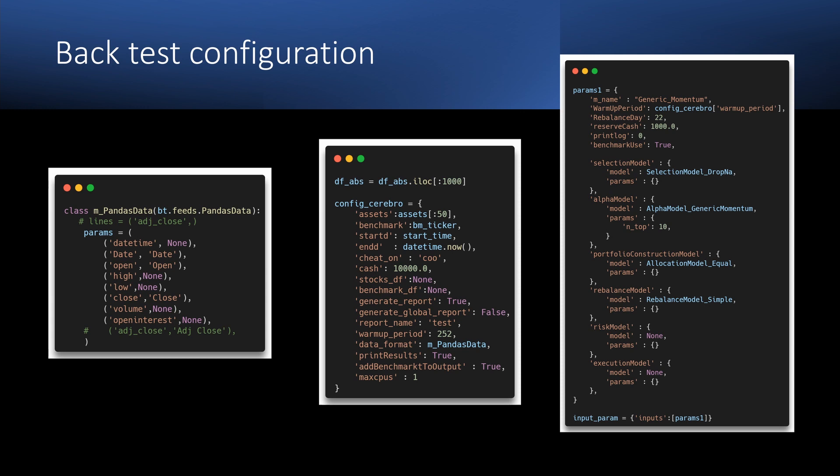After that, we need to create our strategy configuration. You may see that I set rebalance day options to 22, which means we are going to rebalance our portfolio once a month. Also, I define here reserve cash. I use it to avoid errors in order execution due to not enough money.